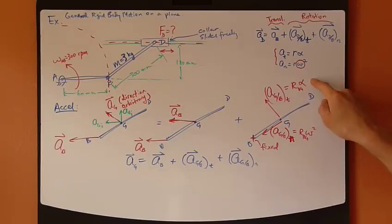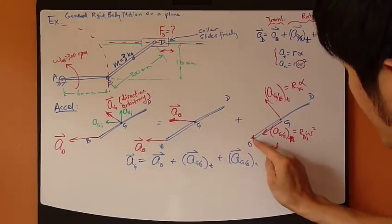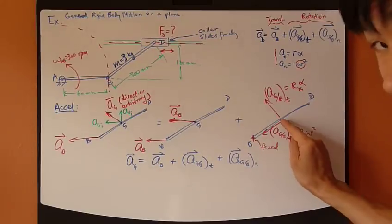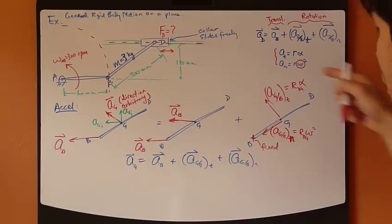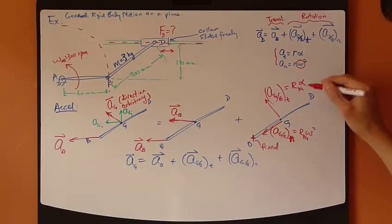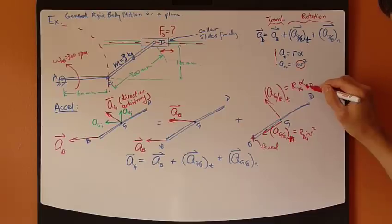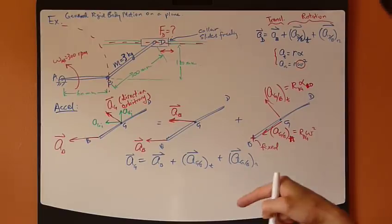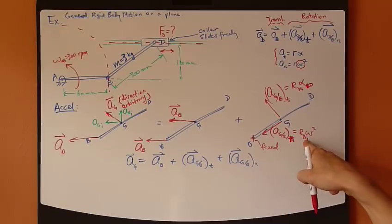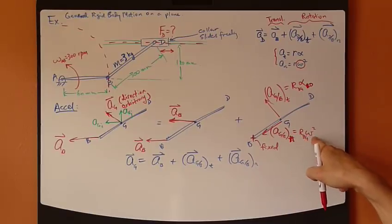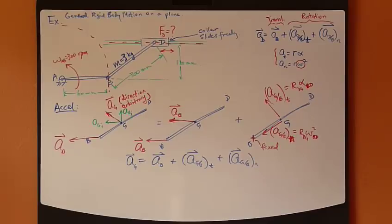And tangent component equals R alpha. R is the distance between B and G, so R_BG. And then alpha is the alpha of the entire rigid body, so alpha_BD, which we just found earlier. And then the normal component is R_BG, and omega of the entire rigid body, BD, squared.